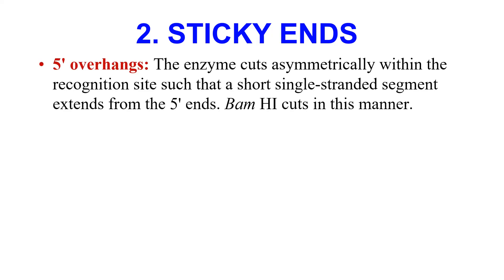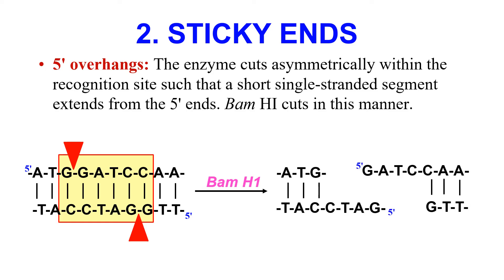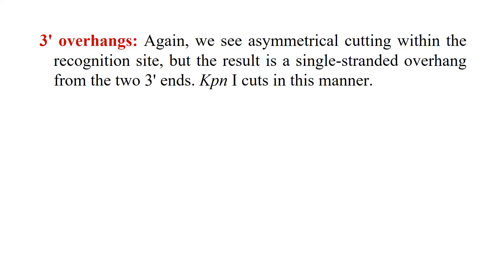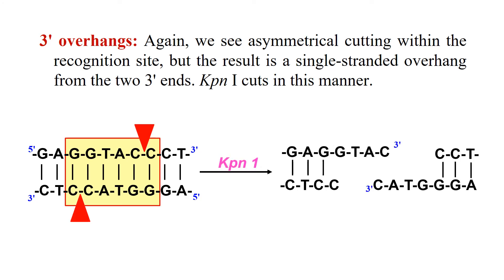The second type of ends produced by restriction enzymes are sticky ends. There may be 5' overhangs — when the unpaired bases are at the 5' end. An example is BamHI: the sequence recognized by BamHI upon cleavage produces two fragments which have sticky ends at the 5' end, hence 5' overhangs. Similarly, they can also produce 3' overhangs — which have unpaired bases at the 3' end. The restriction enzyme KpnI recognizes its specific sequence, and upon cleavage produces two fragments with sticky ends or unpaired bases at the 3' end.